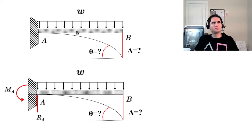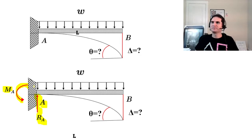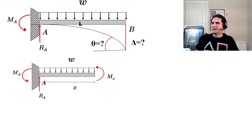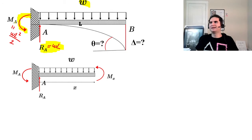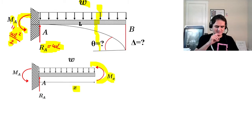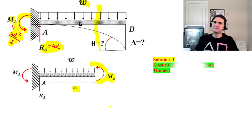Let's start with the equation of the elastic curve from the moment. We can calculate the moment using the equilibrium equation, taking moments about A. For a cantilever beam with uniformly distributed load, MA equals WL squared over 2, and RA equals WL. If we cut the beam at a section of length x, there is a moment Mx at that section.